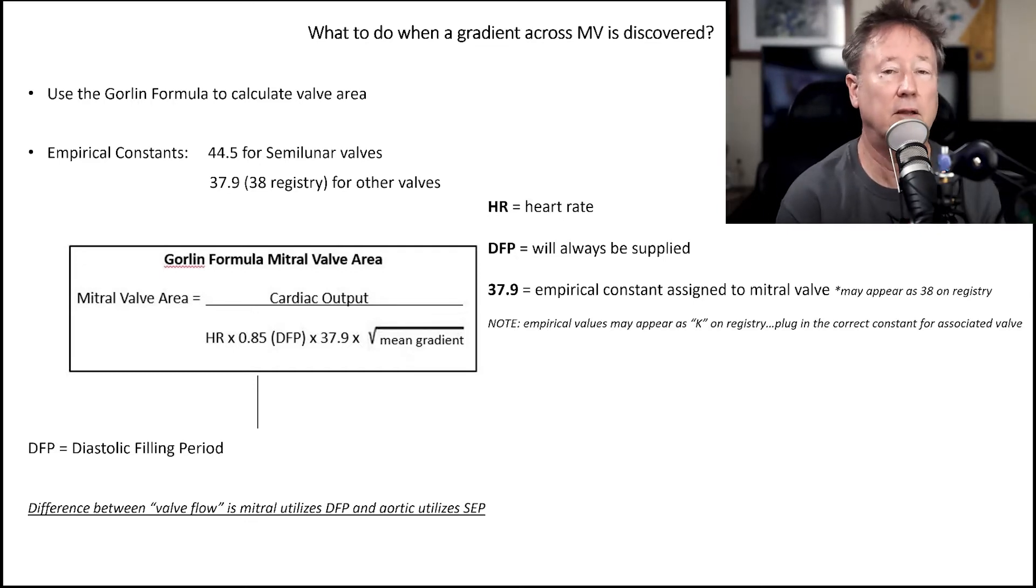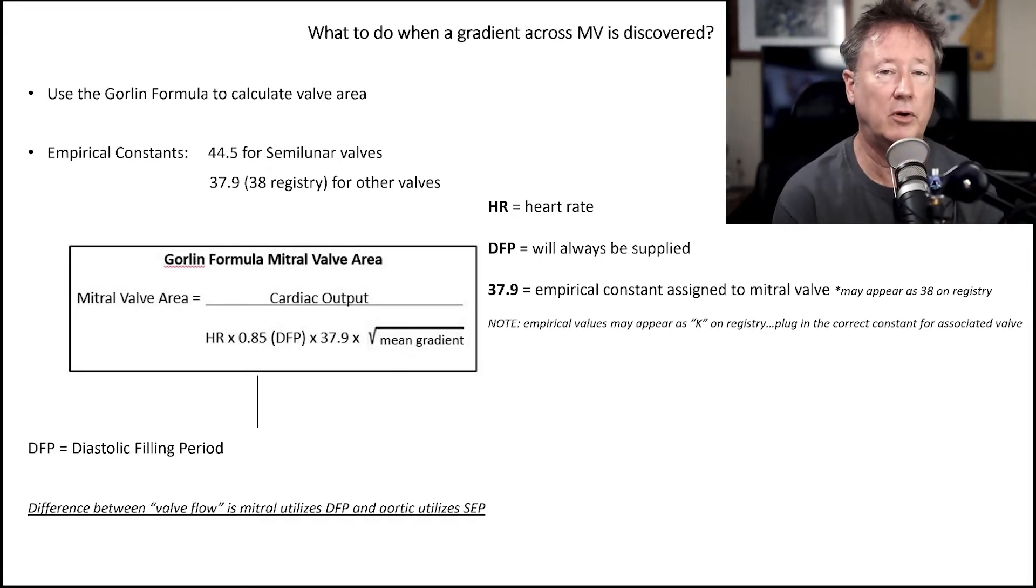Your recording system will give you the heart rate. You need an accurate heart rate. If you have somebody that's unstable, has runs of SVT, someone's having variable heart rate, it will make a difference in your valve area. And your diastolic filling period will be given to you by the computer. If it's in milliseconds, you have to divide by a thousand and put it into seconds. Now your constant, depending on your computer system may use 37.9 or 38, pretty much the same thing. And it's the square root of the mean gradient and your recording system will give you the mean gradient.